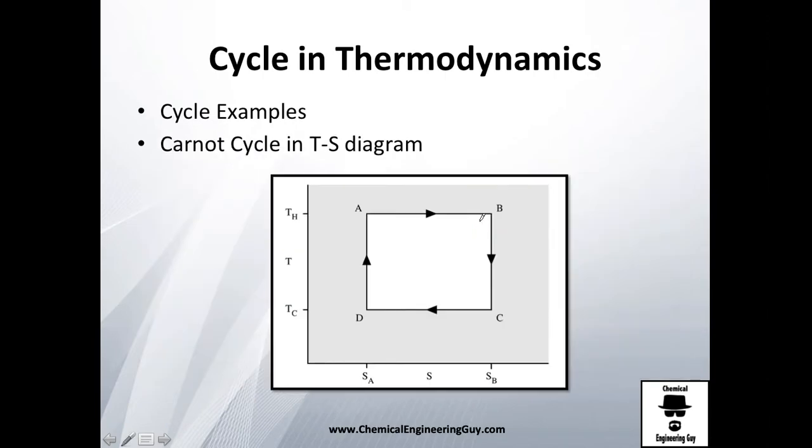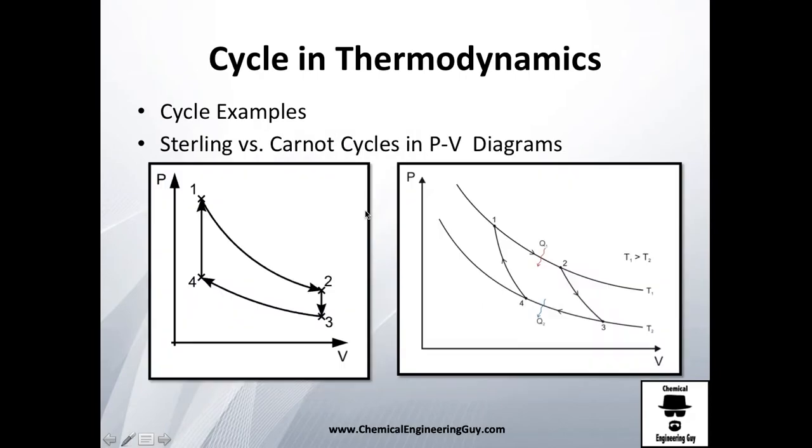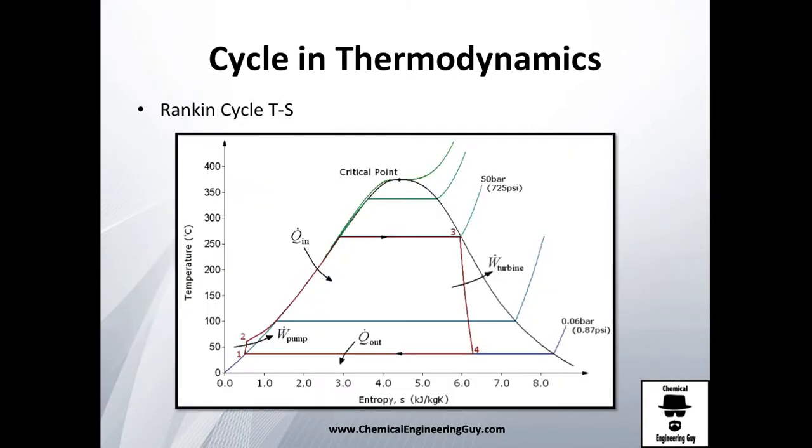And there's also the Carnot cycle where you have temperature versus entropy, point A, B, then C, then letter D, and then you start all over. That's about cycles. I don't want to see a lot of that because we are going to have a complete chapter on cycles, but just get the idea that a cycle is a process in which you start from one point and you finish in that point.